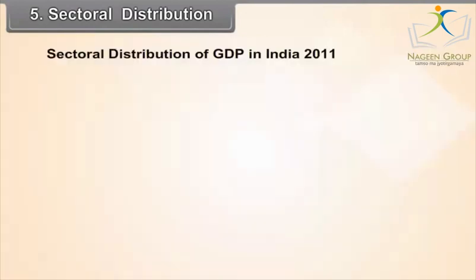Sectoral distribution of GDP in India 2011. Sectoral distribution of GDP is an index which measures the economic development of a country. In India, the contribution of the secondary and tertiary sector in GDP is rising, indicating an increase in India's economic development.